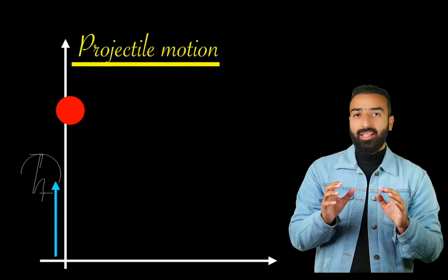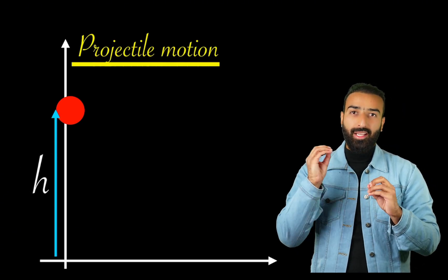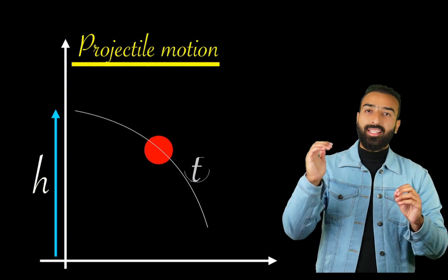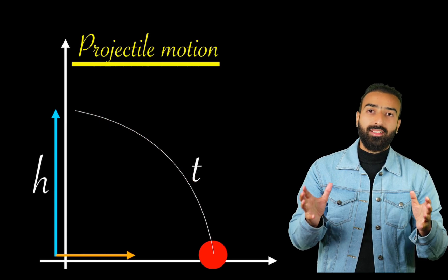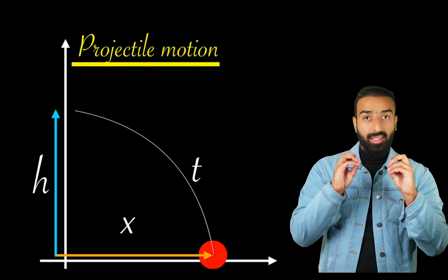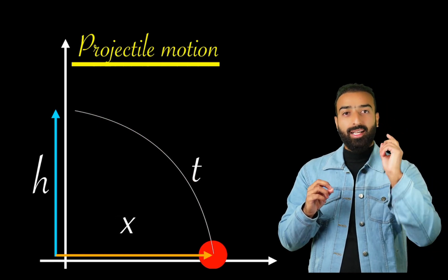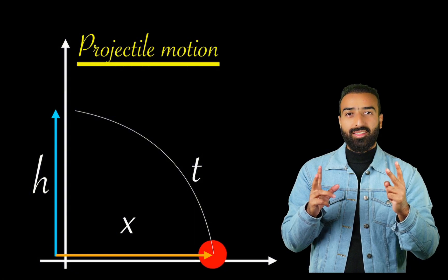A man jumps off from height h and takes time t before he hits the water and meanwhile covers a horizontal distance x. In this video, we want to find both the time and the horizontal distance. So, let's get started.